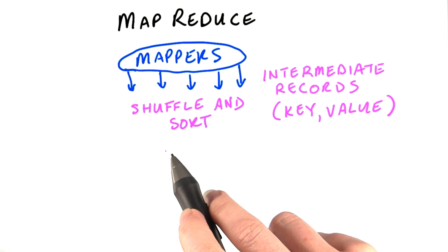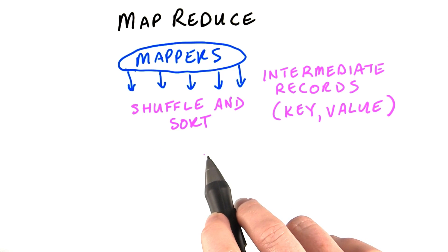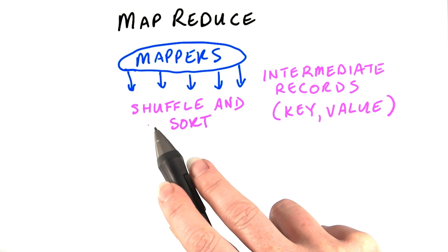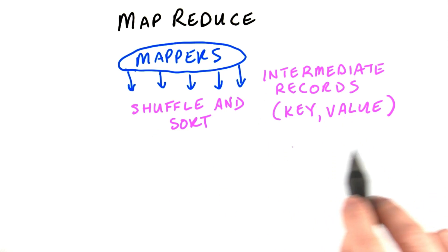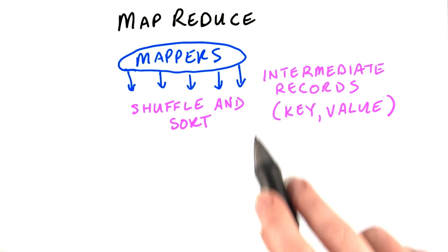Once the mappers have finished, a phase of MapReduce called the shuffle and sort takes place. The shuffle is the movement of the intermediate records from the mappers to the reducers.